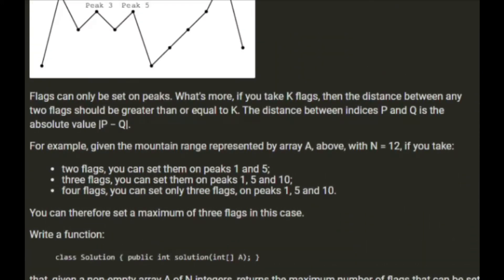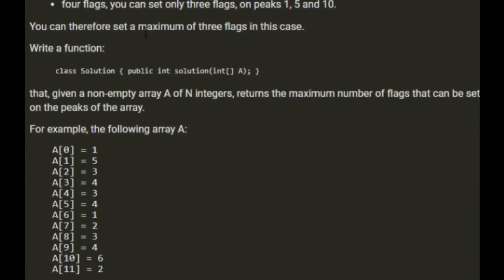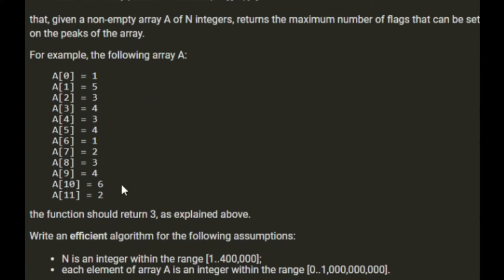Given the mountain range represented by the array with n equals 12: if you take two flags you can set them on peaks 1 and 5. With 3 flags you can set them on 1, 5 and 10 - they need to be at least 3 apart, so you can't put one on 3. With 4 flags you can only set 3 flags on 1, 5 and 10 because 3 is too close to 1 and 5. Therefore the maximum is 3 flags. The function should return 3.